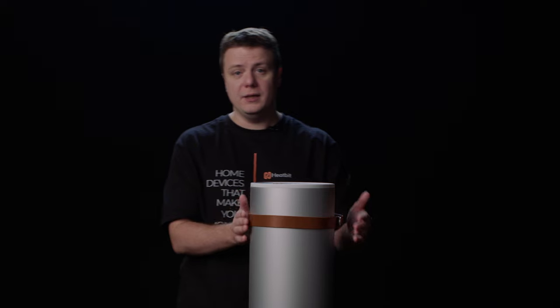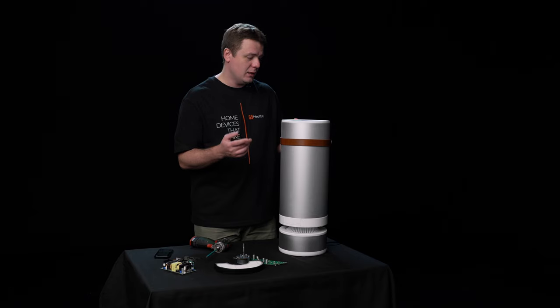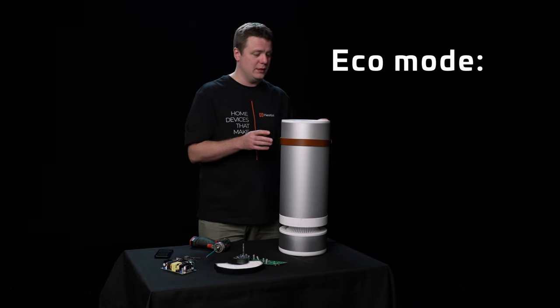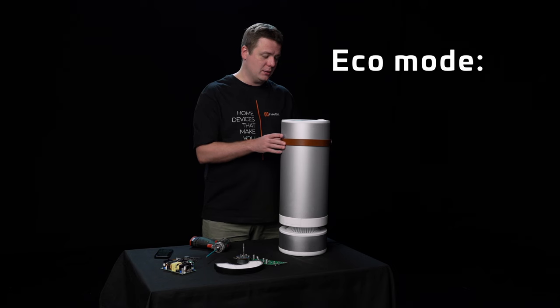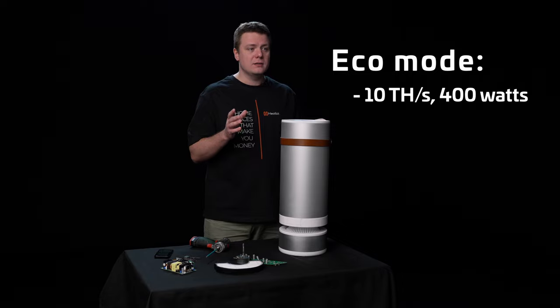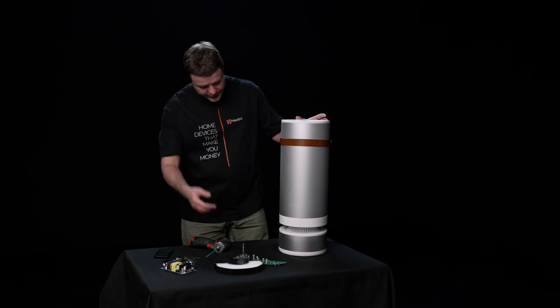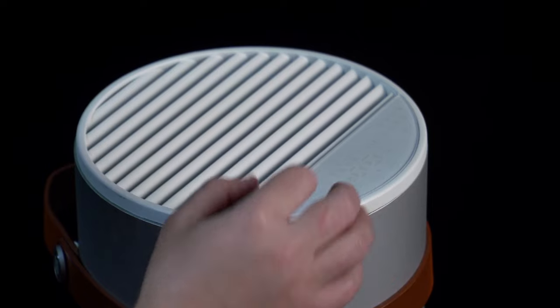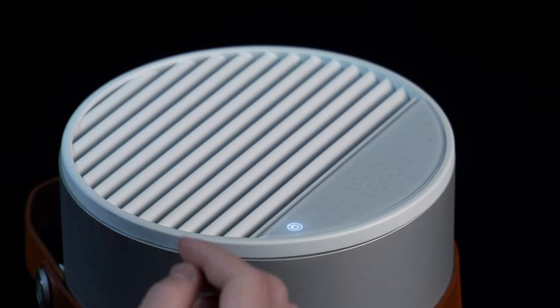This is a HeatBit Mini. It's a heater and an air purifier. It's working right now in the eco mode, mining Bitcoin at about 10 terahashes. It's very, very quiet. It's like a quiet AC mode. The air comes from here, comes out here much cleaner and warmer. Here you've got the panel with the touchpad and indication of the device performance.